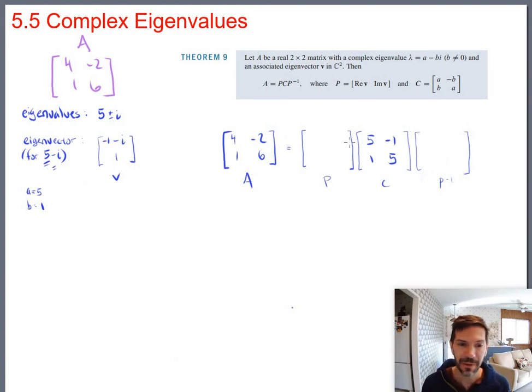The P matrix is supposed to be made up of the real part of V as the first column and then the imaginary part of V as the second column. So the real parts of V are negative 1 and 1. So negative 1 and 1. The imaginary parts are, so this i has a negative 1, and this i down here, 0. So there's our P.